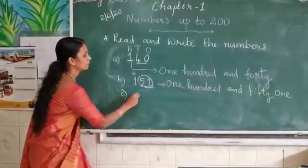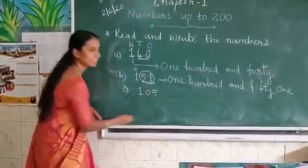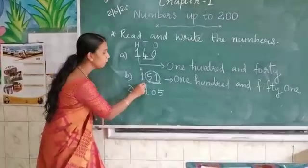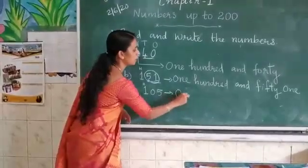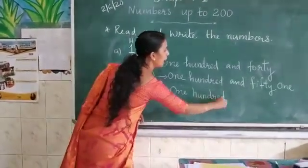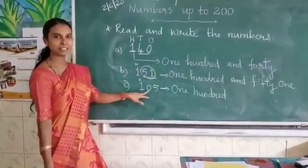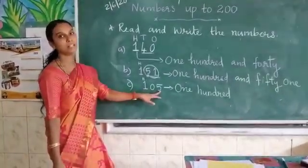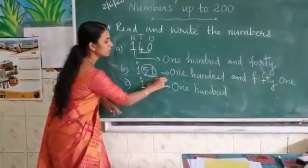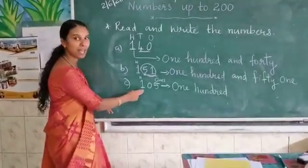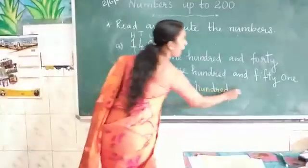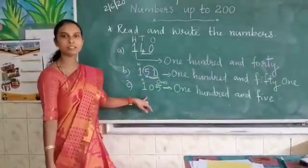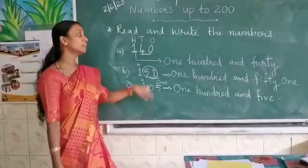Then one more. Look at this. How to read this three-digit number? How many hundreds? Only one hundred. And what happened here? There is no ten — the tens place is zero. So you read only the ones place, which is five. So you read this three-digit number as one hundred and five. You can write one hundred and five.